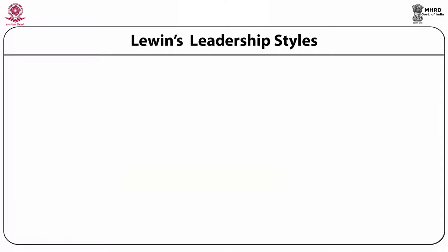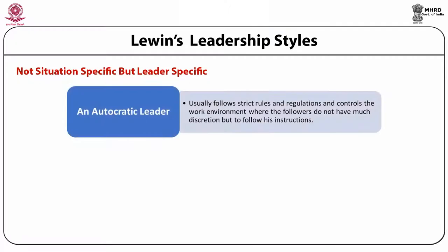Lewin's leadership styles says that leadership is not situation-specific but leader-specific, whereby the leader's style differentiates leaders from non-leaders. There are three leadership styles: autocratic, democratic, and laissez-faire. An autocratic leader follows strict rules and regulations and controls the work environment where followers do not have much discretion but to follow instructions.